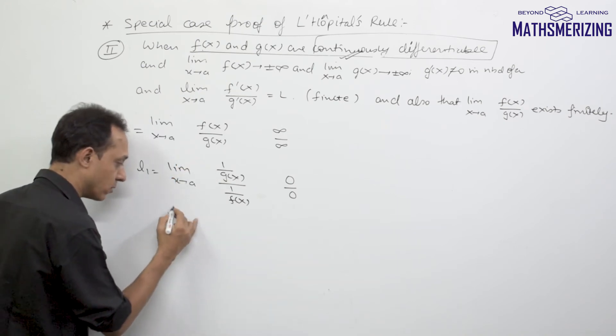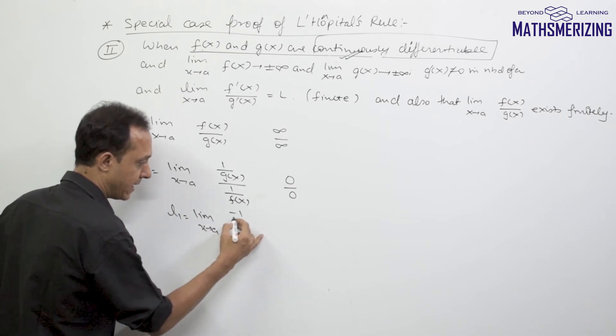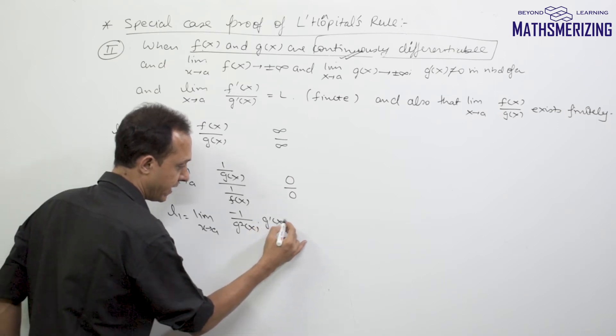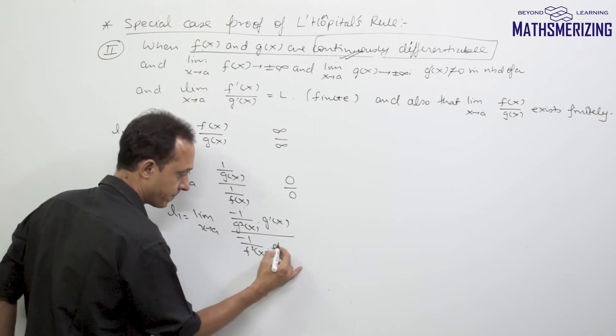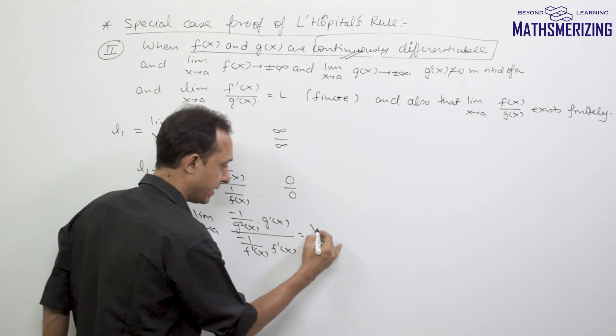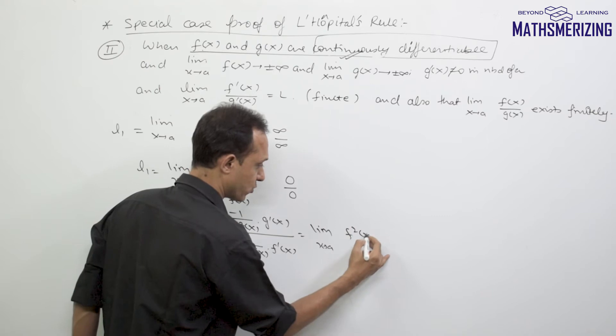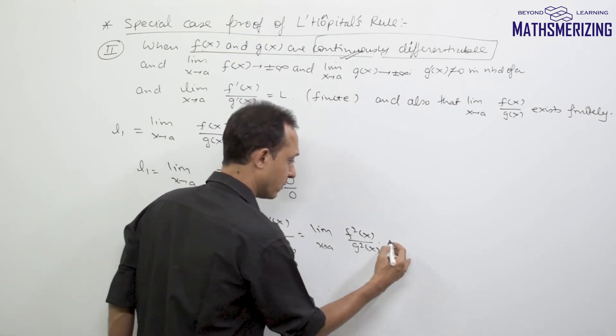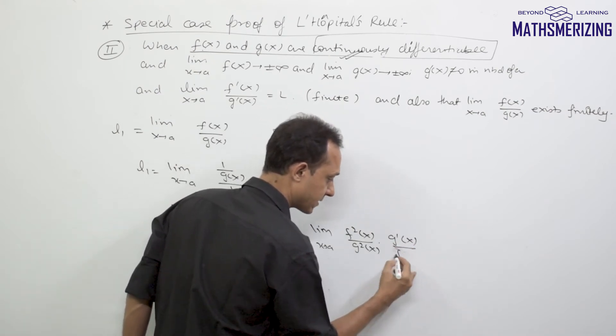So if I apply L'Hopital's rule, I can write L1 as limit x tends to a of minus 1 upon g square x times g'(x) divided by minus 1 upon f square x times f'(x). So I can write it as limit x tends to a of f square x upon g square x times g'(x) upon f'(x).